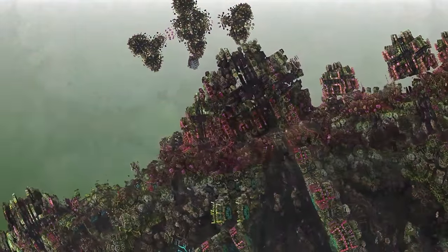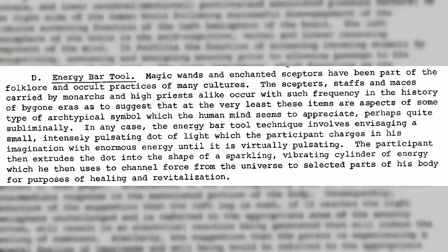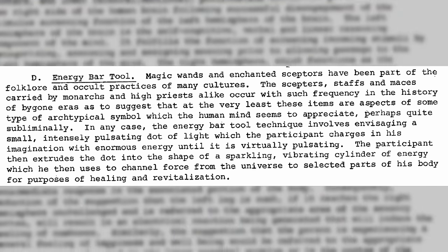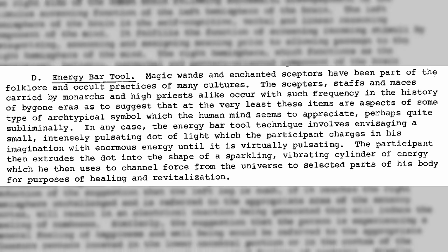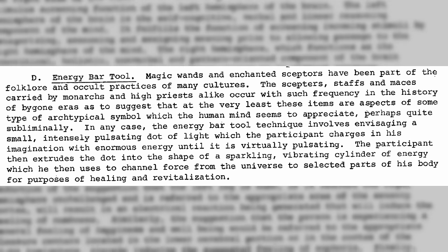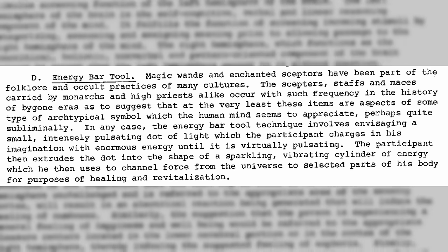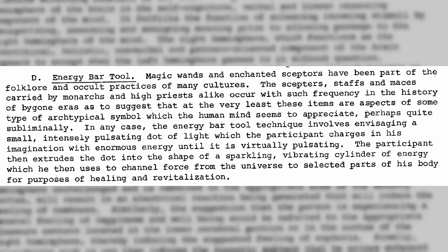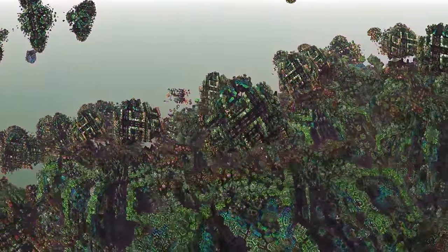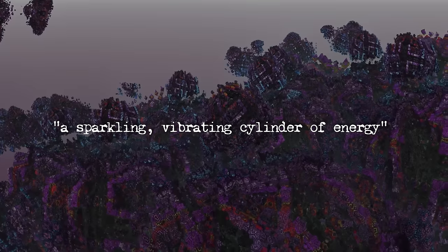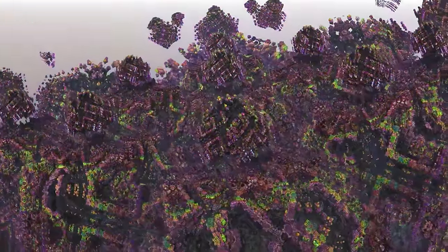The next one is a bit different. I think the text has an interesting take on the theory. Magic wands and enchanted scepters have been part of the folklore and occult practices of many cultures. The scepters, staffs and maces carried by monarchs and high priests occur with such a frequency in history as to suggest that these items are an aspect of some type of archetypal symbol which the human mind seems to appreciate. What you do is, you basically imagine a dot of light and charging it up with energy. Then you extend it into the shape of a sparkling, vibrating cylinder of energy, which you then can channel force from the universe.